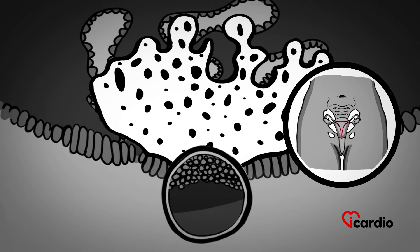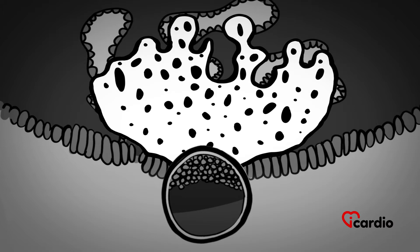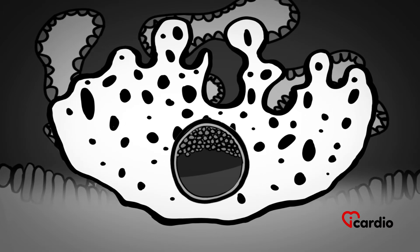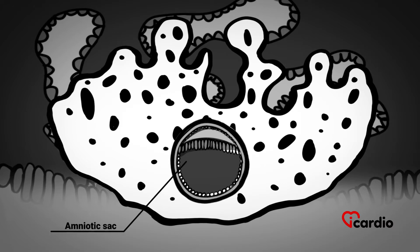Once the attachment is solid, the endometrium completely envelops the embryo. While it is nesting in the endometrium, the future embryo is starting to form. A second cavity takes shape at its top — this will be the amniotic sac, the pouch of water in which the fetus develops. This is the sac referred to when we say that a pregnant woman's waters have broken.